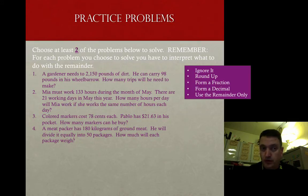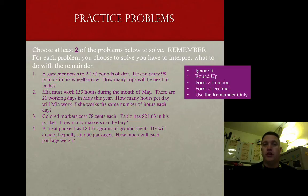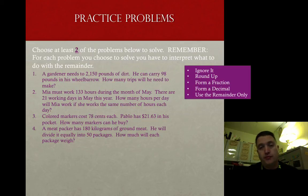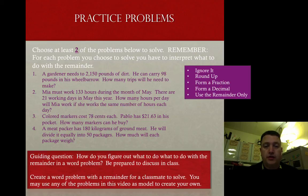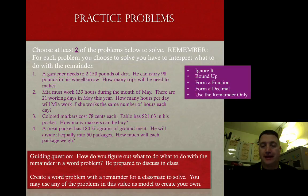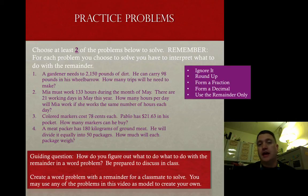Here are your practice problems. Choose at least two of the problems below to solve — if you want to solve three or all four, you're welcome to do that. For each problem you choose, you must interpret what to do with the remainder: ignore it, round up, form a fraction, form a decimal, or use the remainder only. Your guiding question is: how do you figure out what to do with the remainder in a word problem? Be prepared to discuss that in class, and create a word problem with a remainder for a classmate to solve. You can use any of the problems from this video as a model — change the numbers or the context, but copy the style. We'll see you in class.